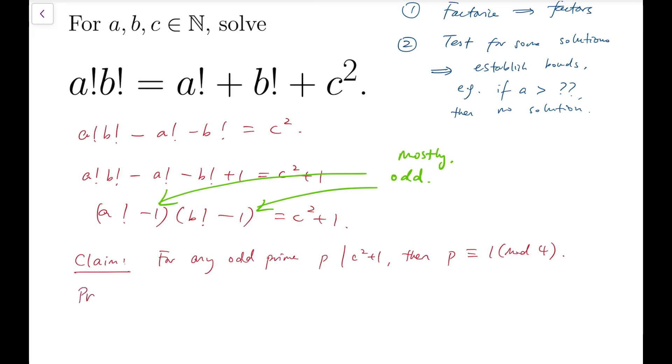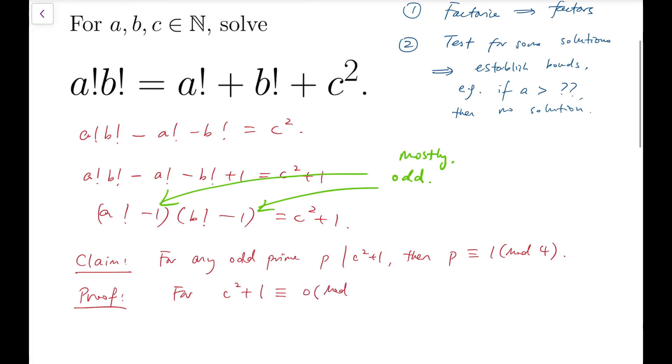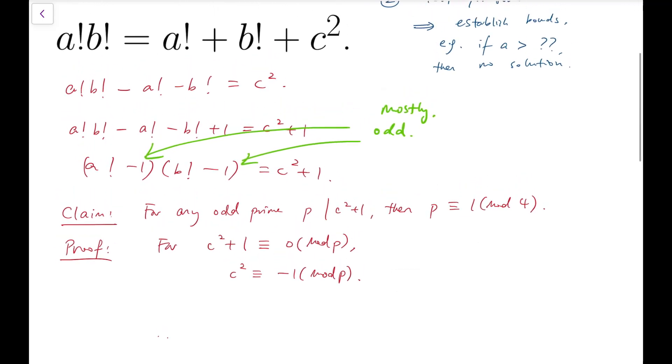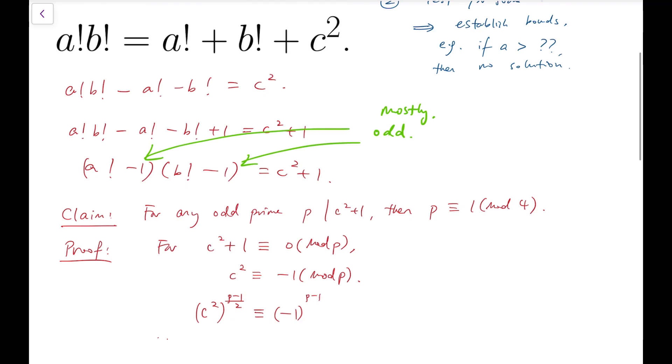To prove this, we say that for c² + 1 to be congruent to 0 mod p, where p is an odd prime, c² is congruent to -1 mod p. Now I'm going to raise both sides to its (p - 1)/2 power, which is possible because p is odd. So p - 1 must be even, and so (p - 1)/2 must be an integer. Then left-hand side will become c^(p - 1), which is congruent to (-1)^((p - 1)/2) mod p.